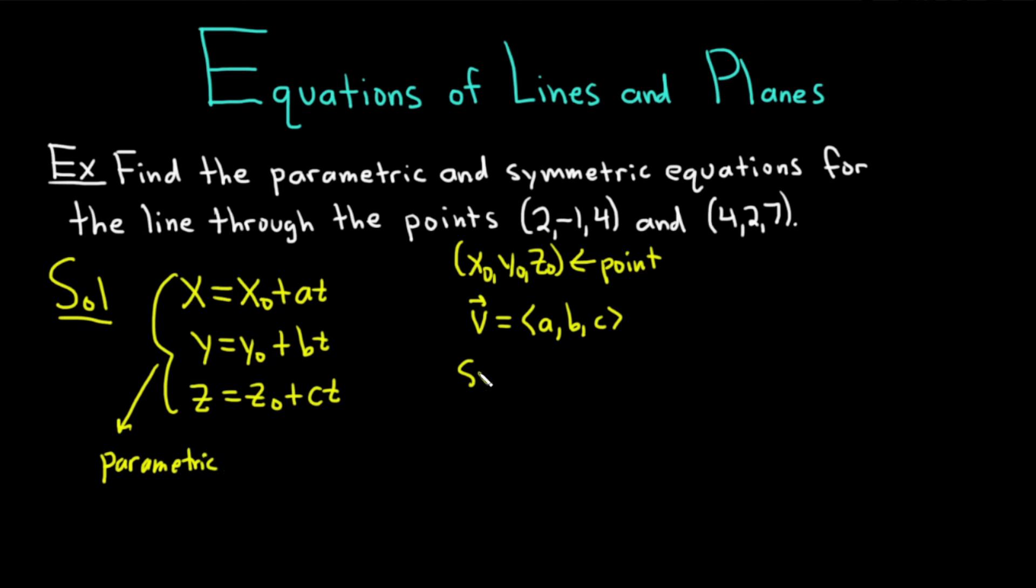The symmetric ones are actually very easy to come up with from this formula. Basically, you solve each of these for t. So if you take the first equation and you subtract x₀ and you divide by a, you get (x - x₀)/a. Then do the same thing for the second one. You would get (y - y₀)/b.